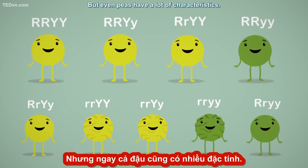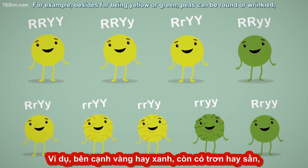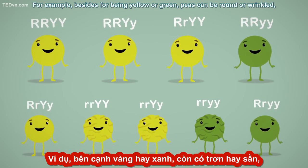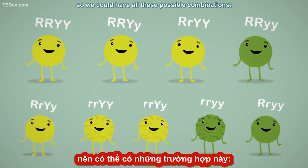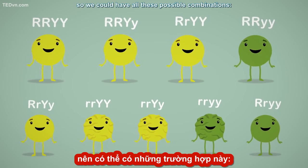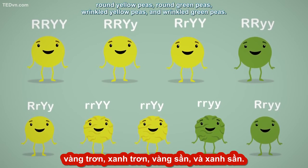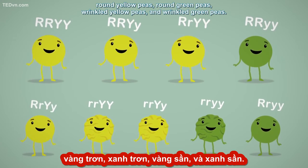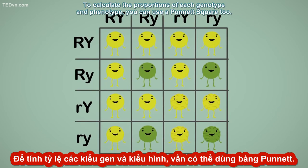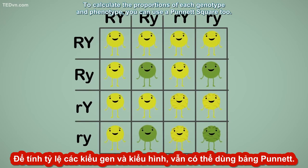But even peas have a lot of characteristics. For example, besides being yellow or green, peas may be round or wrinkled. So we could have all these possible combinations: round yellow peas, round green peas, wrinkled yellow peas, and wrinkled green peas. To calculate the proportions for each genotype and phenotype, we can use a Punnett square too, though of course this will make it a little more complex.